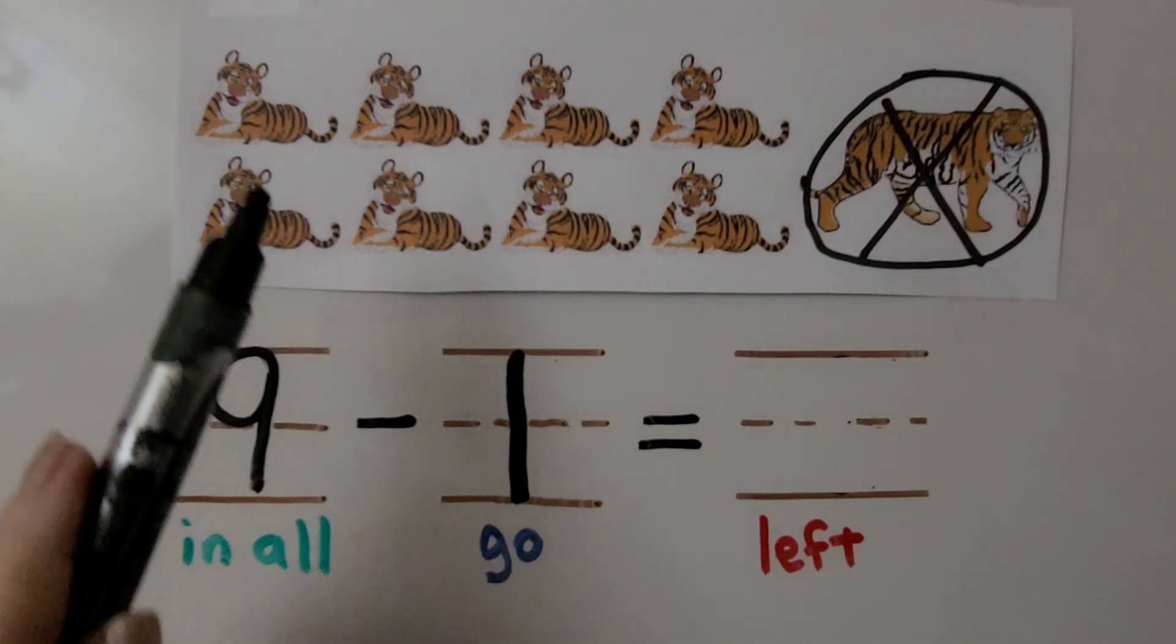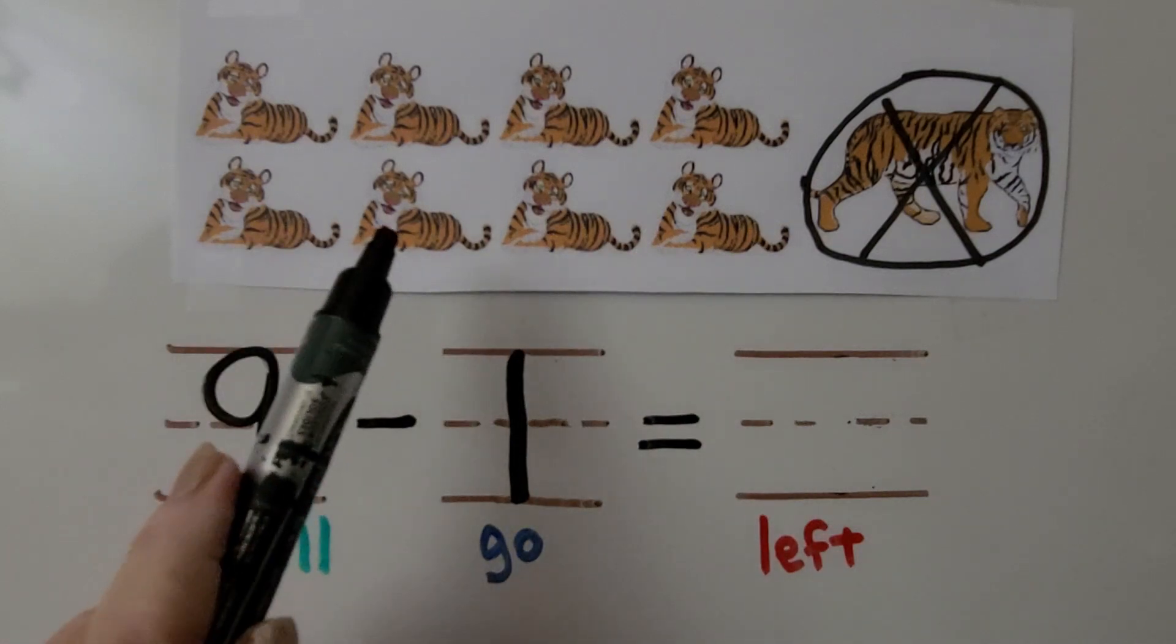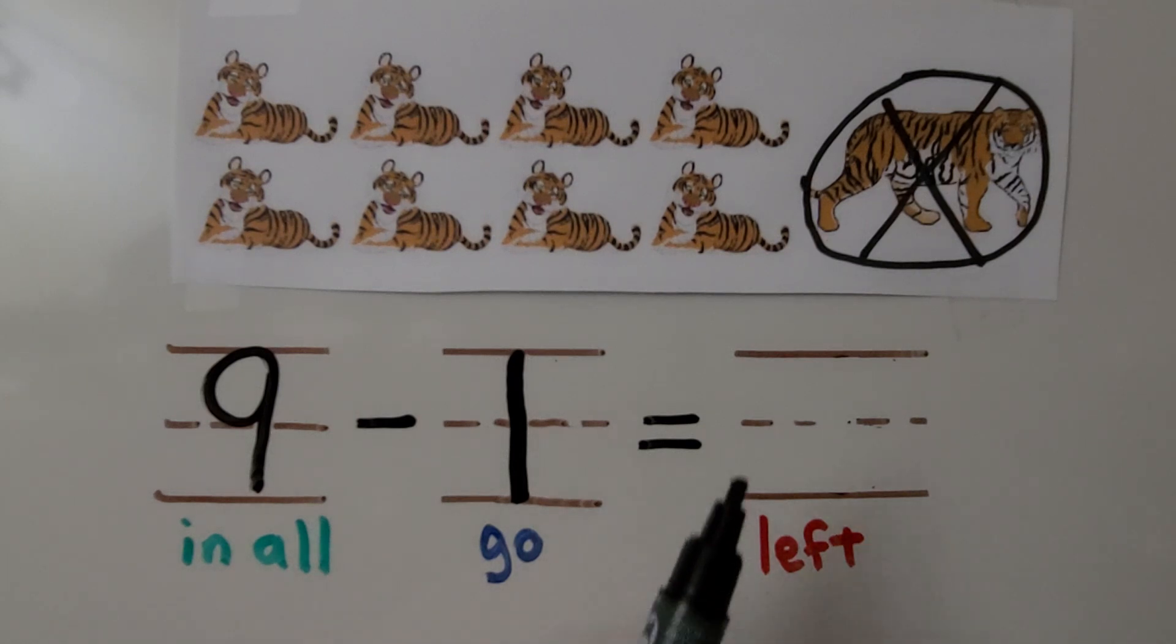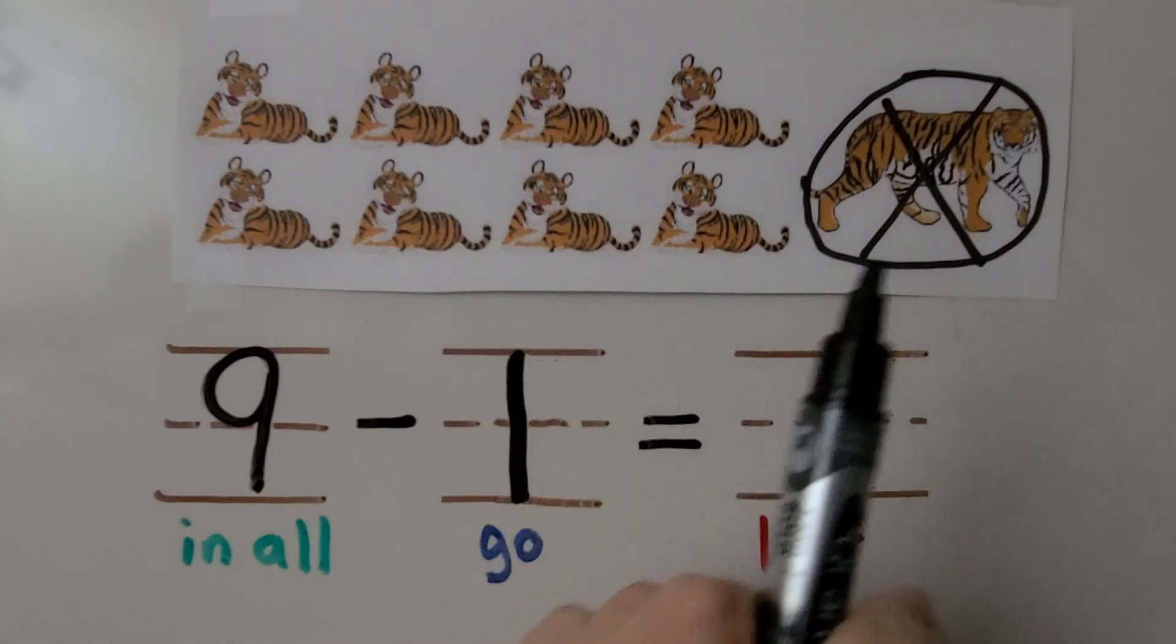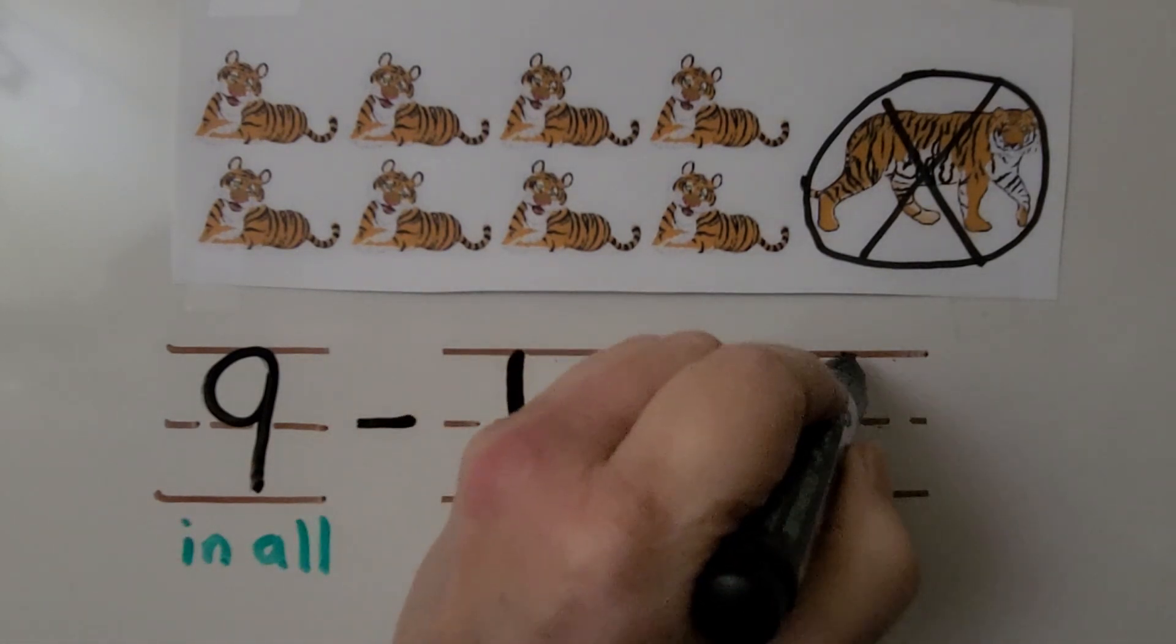We can count them. One, two, three, four, five, six, seven, eight. There are eight tigers left. And if we have nine in all, one less than nine is eight. And we can write eight. Nine minus one is equal to eight.